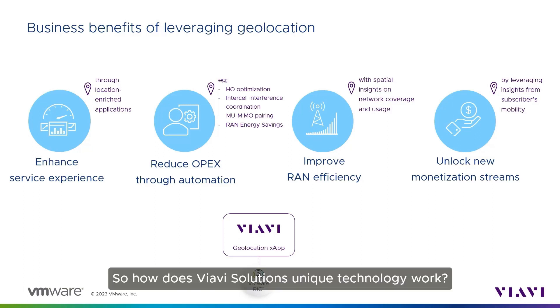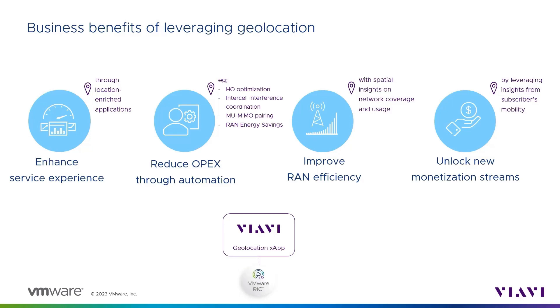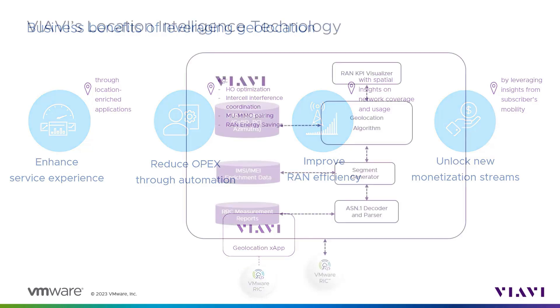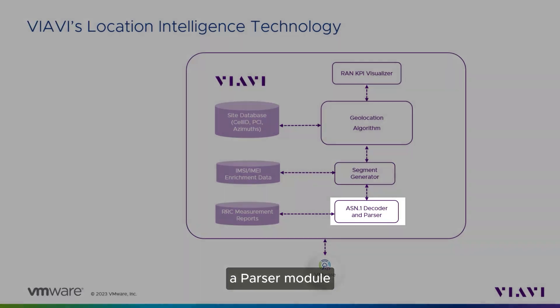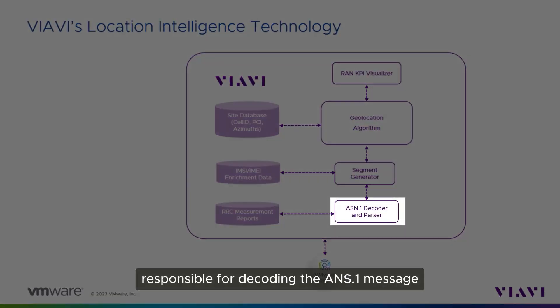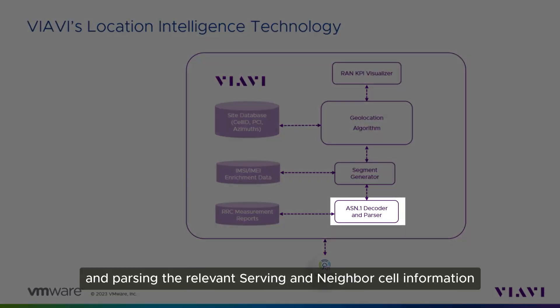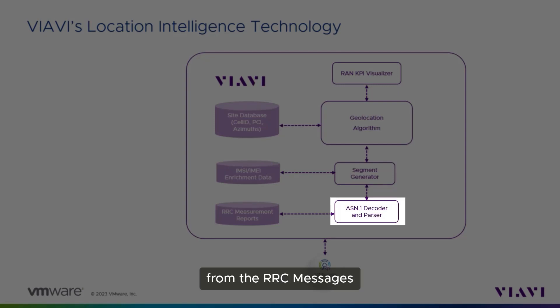So how does VIAVI Solutions' unique technology work? The XApp is composed of a parser module responsible for decoding the ASN.1 message and parsing the relevant serving and neighbor cell information from the RRC messages.